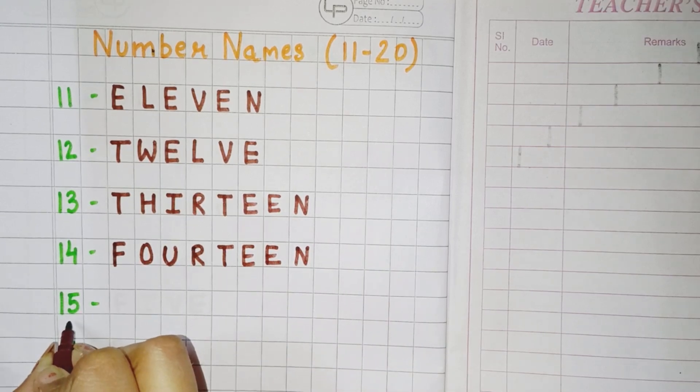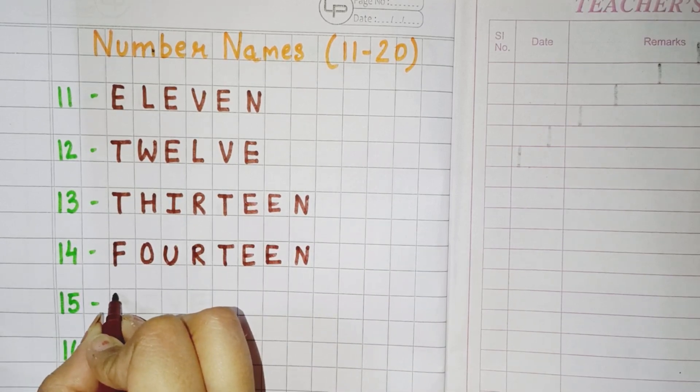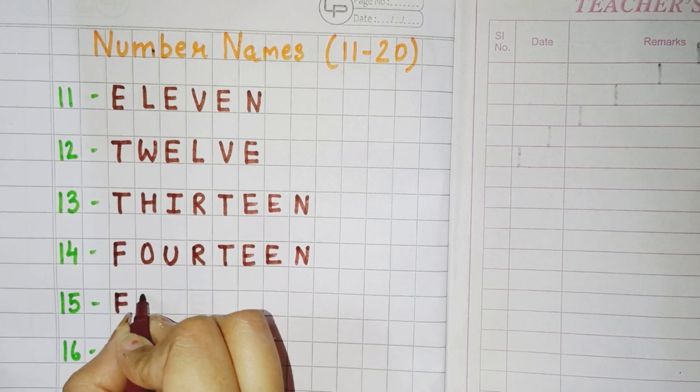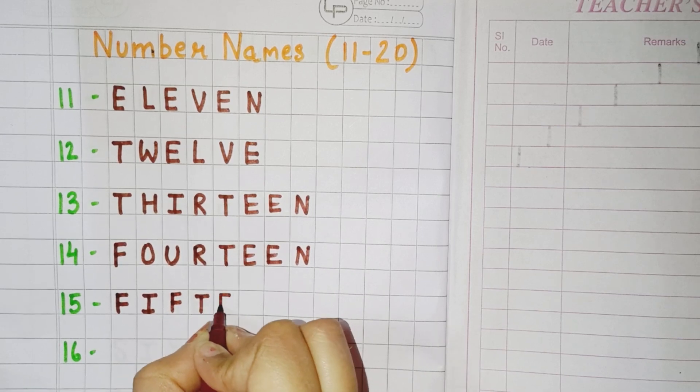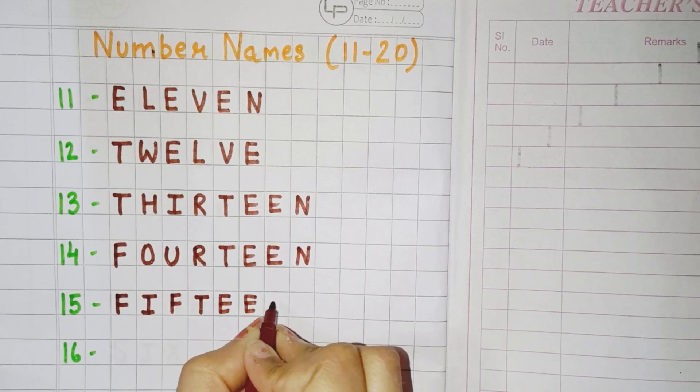Now next is 15. So you will write F, I, F, T, double E, N. Fifteen.